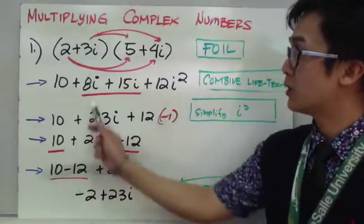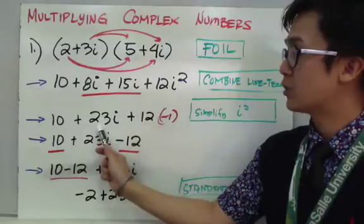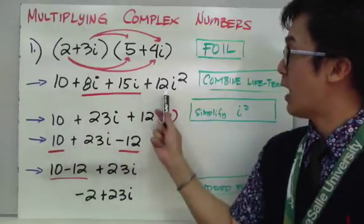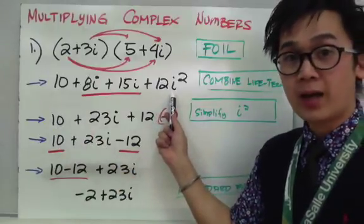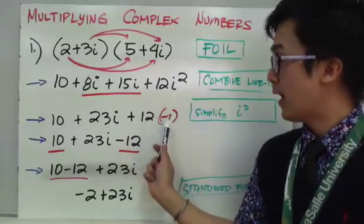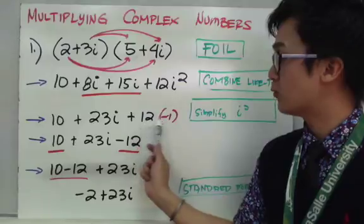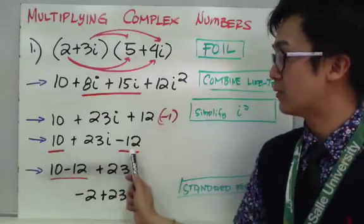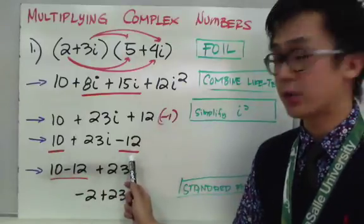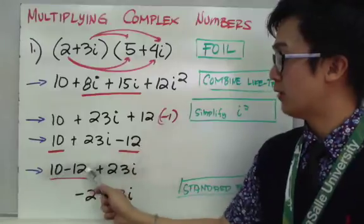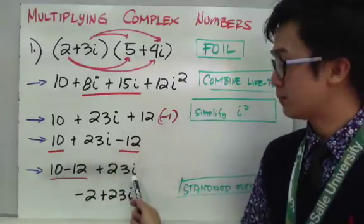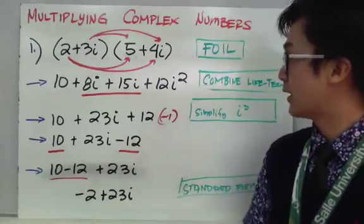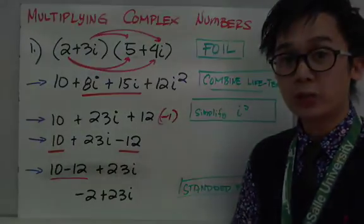Now we simplify by combining like terms. The middle terms 8i and 15i combine to give 23i. We carry down the 10. Then 12i squared simplifies: replacing i squared with negative 1 gives 12 times negative 1, which is negative 12. Combining the real parts, 10 minus 12 is negative 2. So the final answer is negative 2 plus 23i, already in standard form. That's how we multiply two complex numbers using the FOIL method.